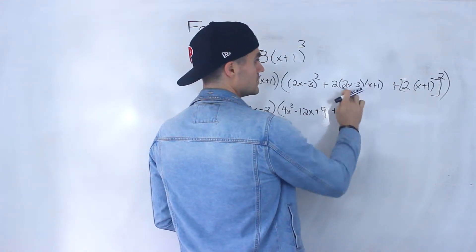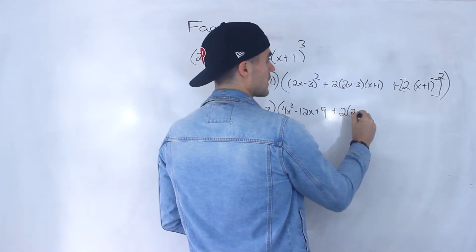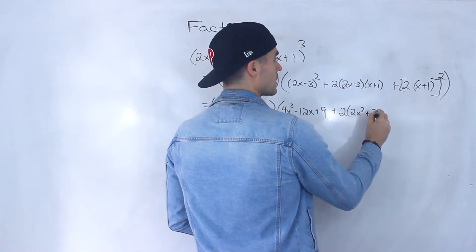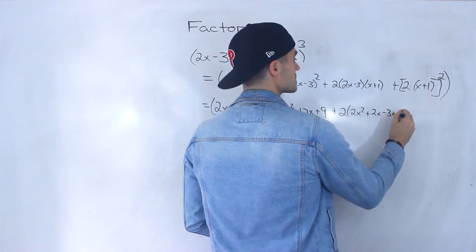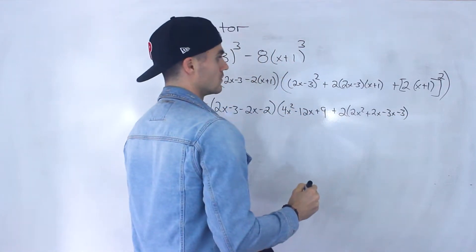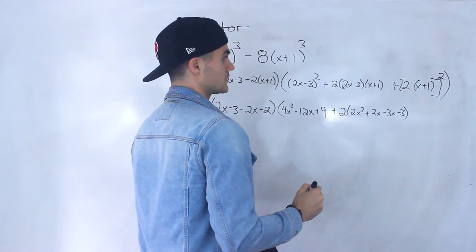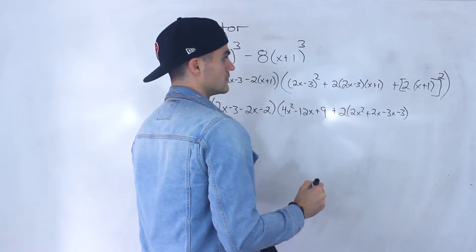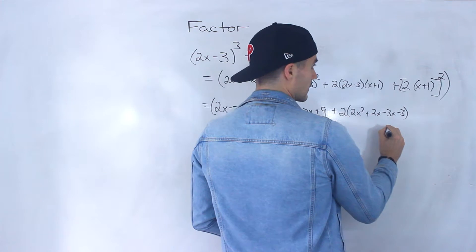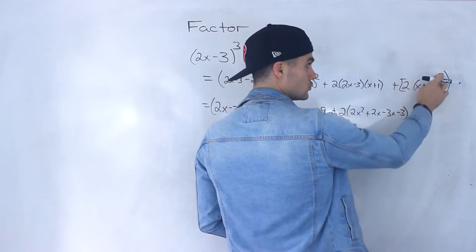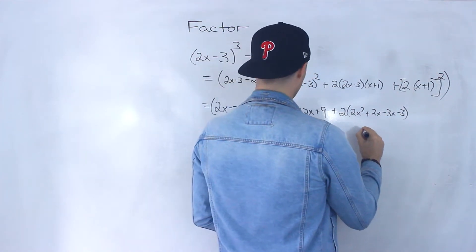I'm going to foil out these two brackets. So we'd have 2x² + 2x - 3x - 3. Let me just make sure that that's all good. Yeah, that's fine. And then this here, the 2 goes to the power 2, so we'd have 4.